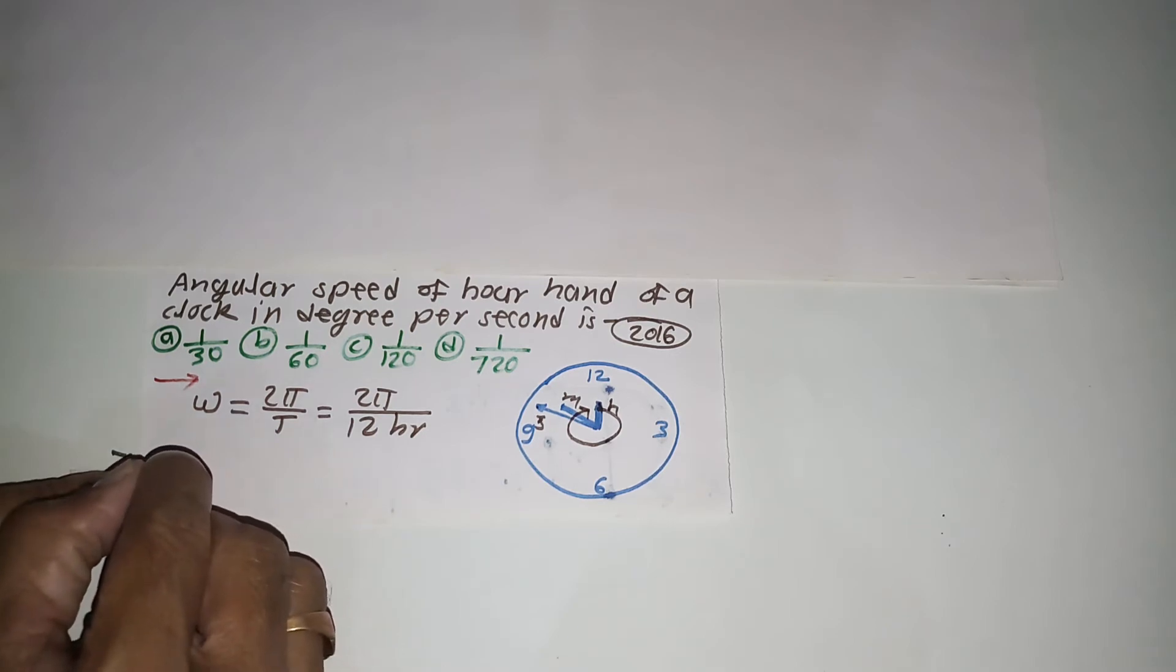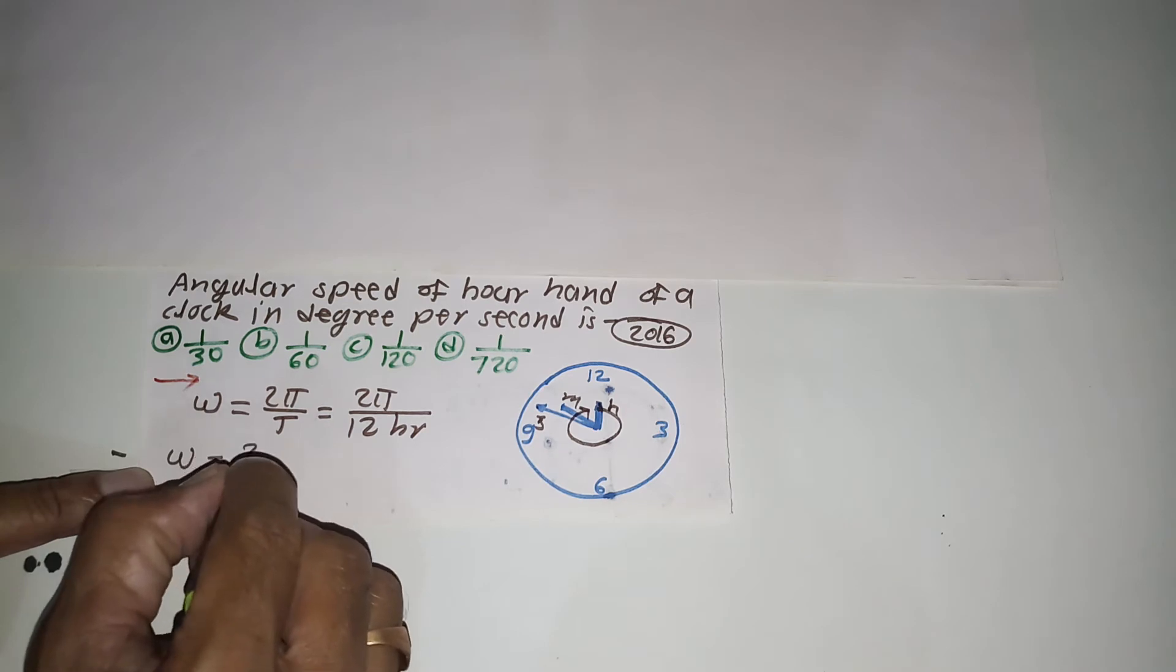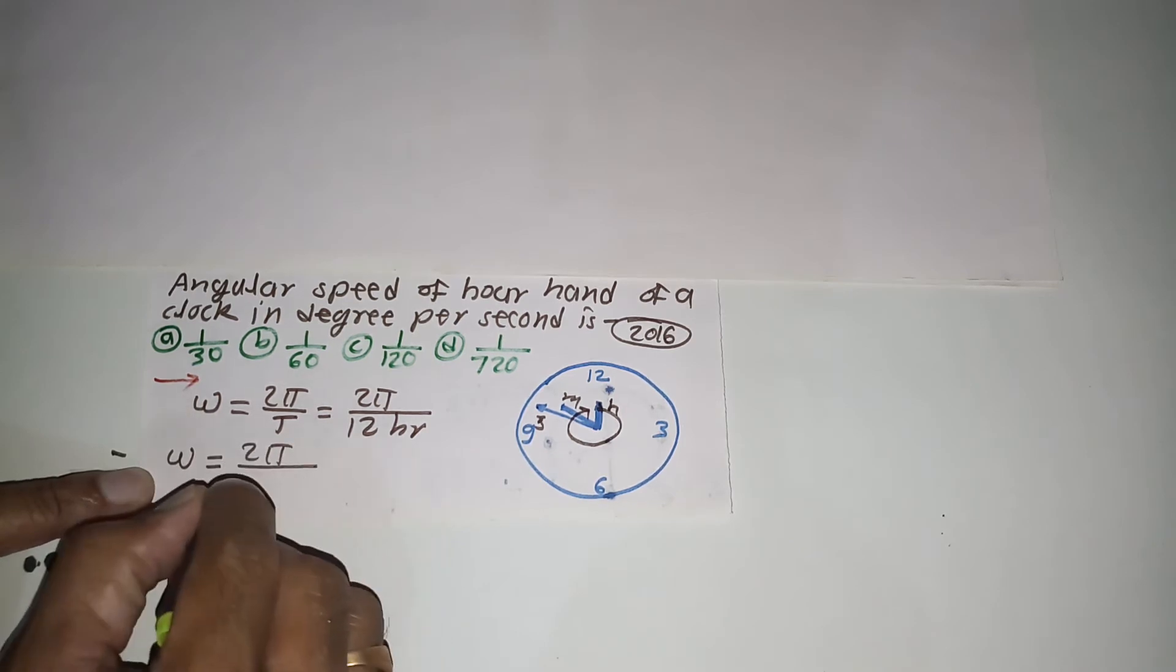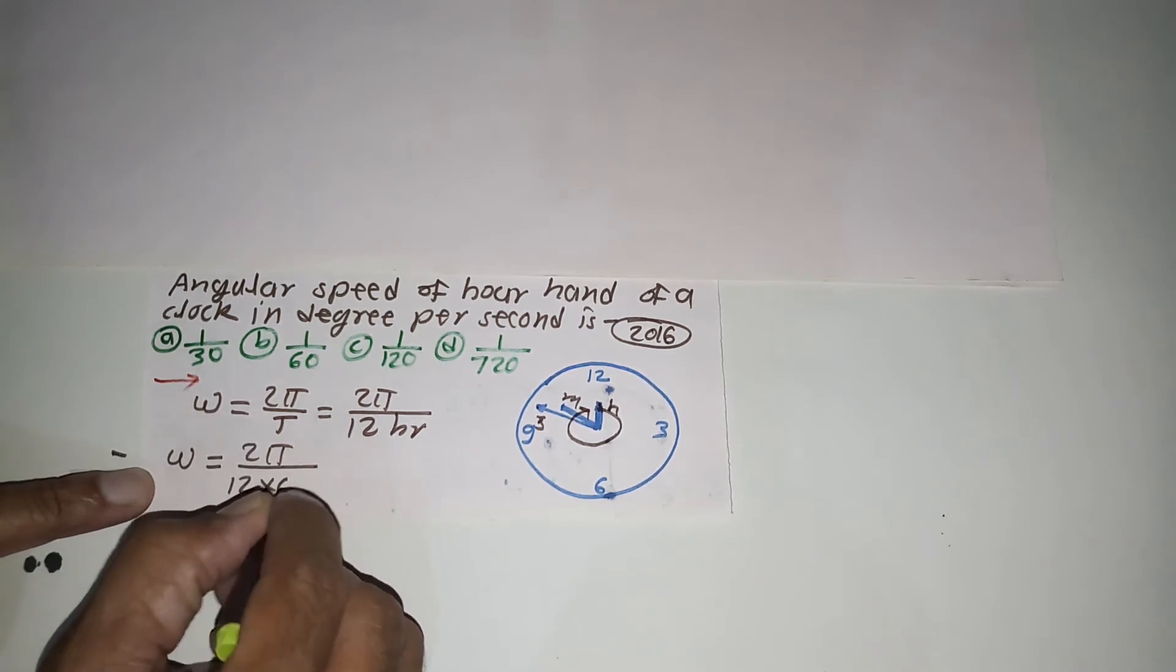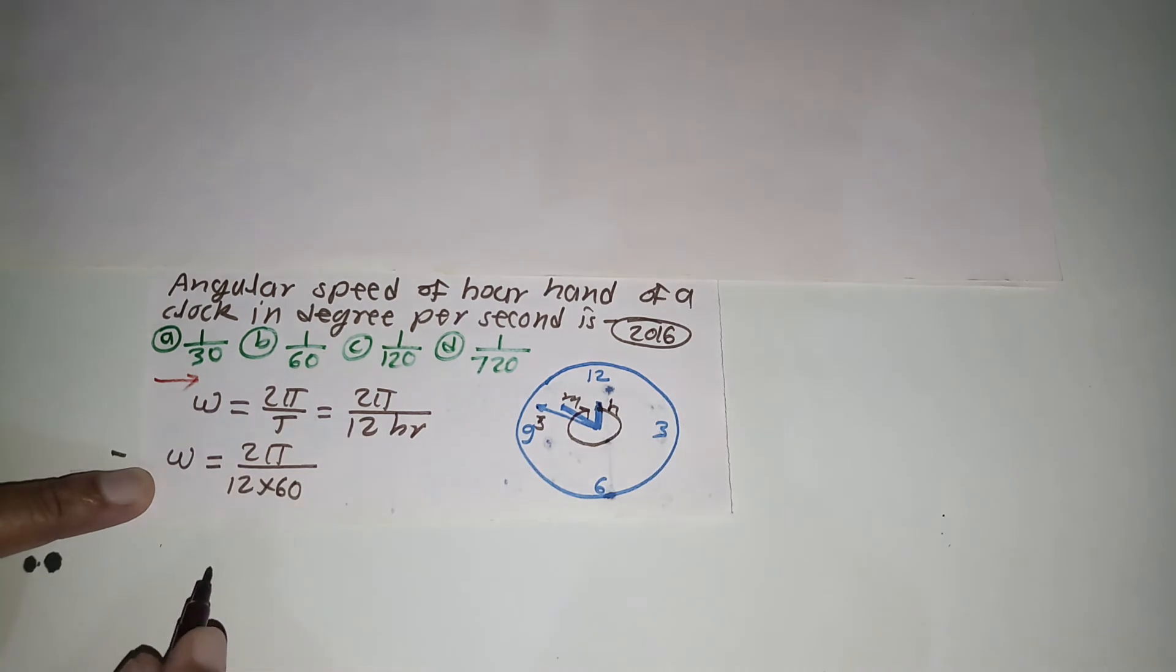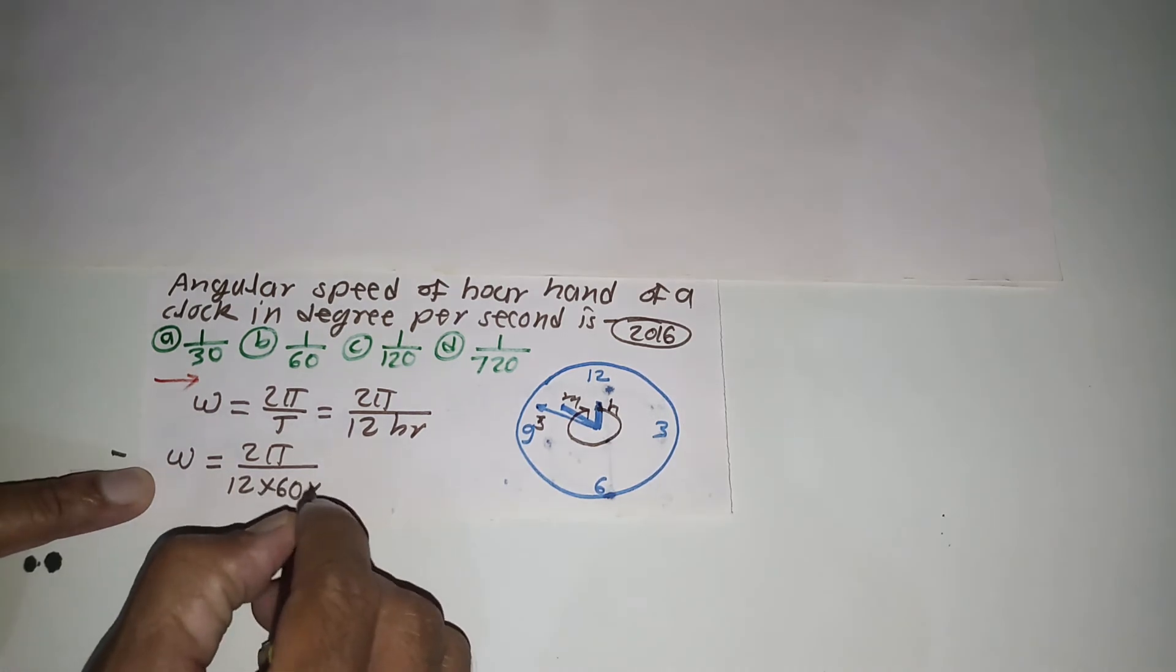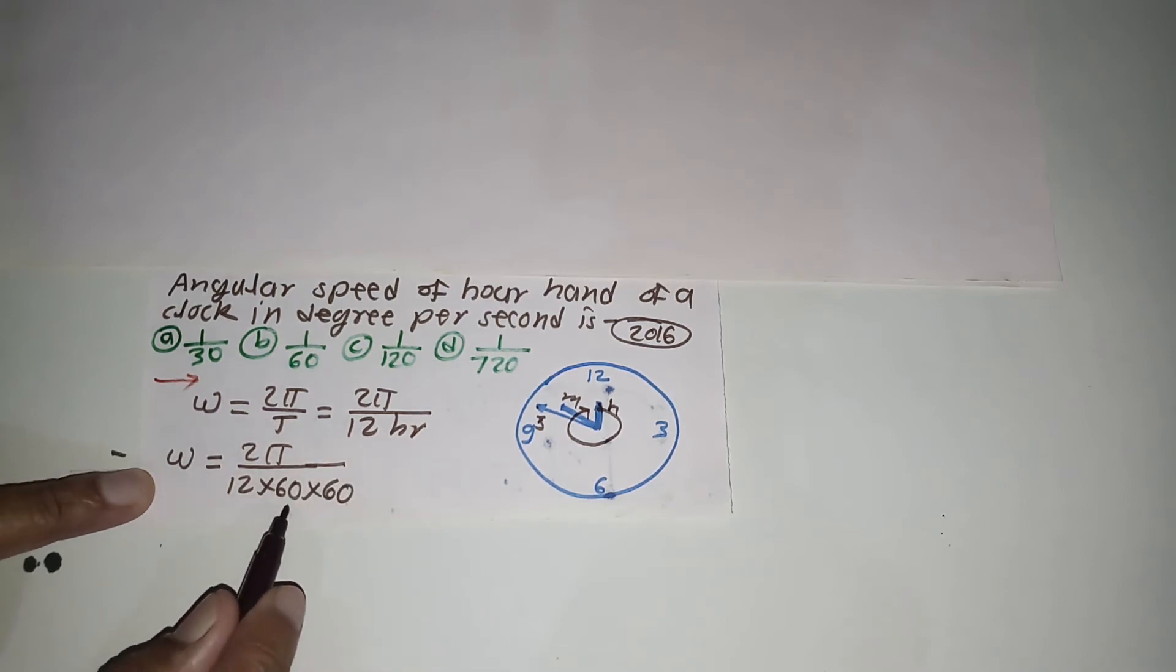Therefore, angular speed of the hour hand omega is equal to 2π upon 12 into 60, which converts it into minutes, again multiplied by 60, which converts it into seconds. This is per second.